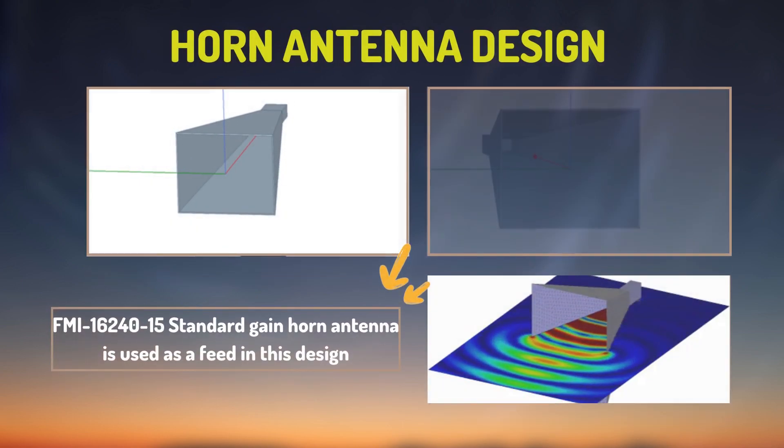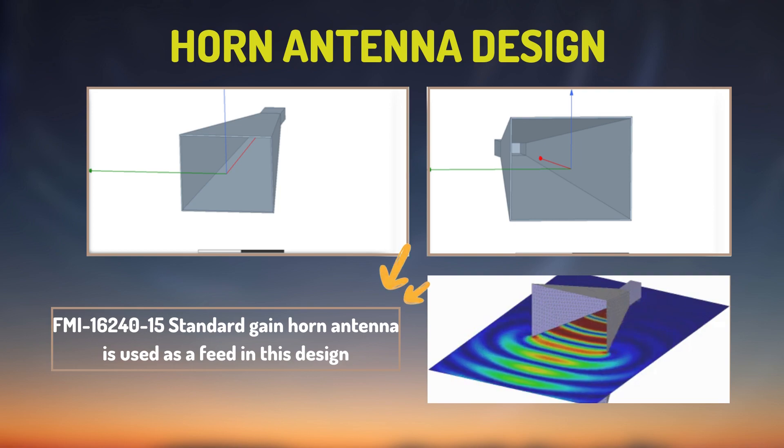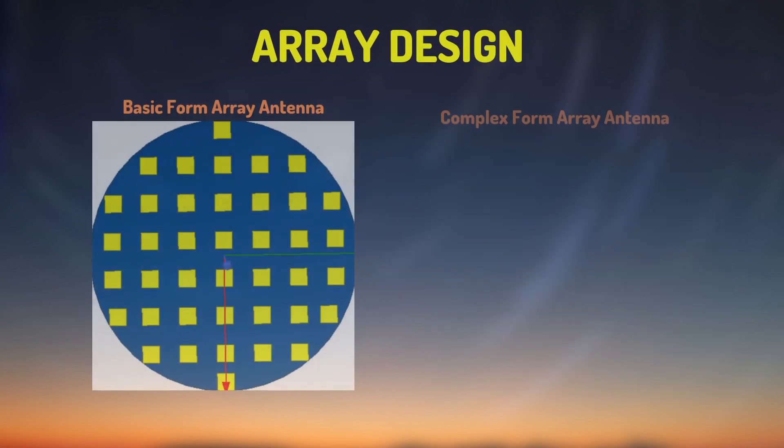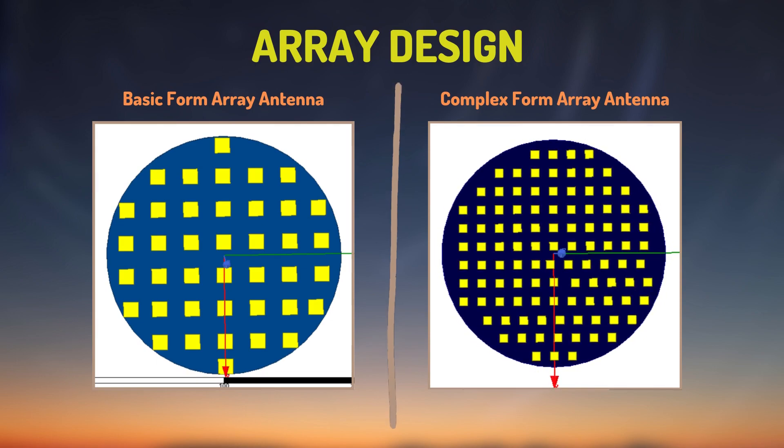In this design, a gain horn antenna which operates at X-band is used and first it is simulated separately. Before dealing with the phase tuned array antenna, first a simple version is designed, and after that number of elements are increased and more complex version of the array antenna is obtained. To get rid of cross-polarization, distance between the patch antennas is kept lambda over 2.